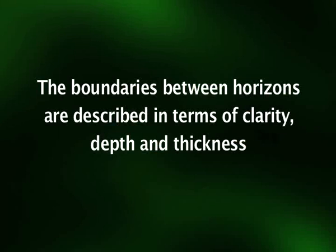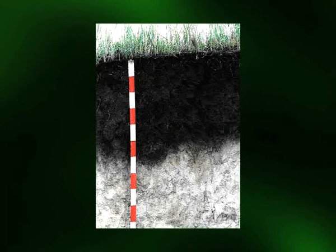The boundaries between horizons are described in terms of clarity, depth, and thickness. The uppermost A horizon of a soil profile is darker in color than the lower horizons; this difference is due to the accumulation of organic matter that results from the decay of plant roots and other organic residues incorporated into upper soil layers. Also, weathering tends to be more intense in upper horizons. Some products of weathering have been leached out of these layers, which are collectively termed A horizons. The underlying layers contain comparatively less organic matter and are characterized by an accumulation of substances such as silicate clays, iron, and aluminum oxides, gypsum, and calcium carbonate.